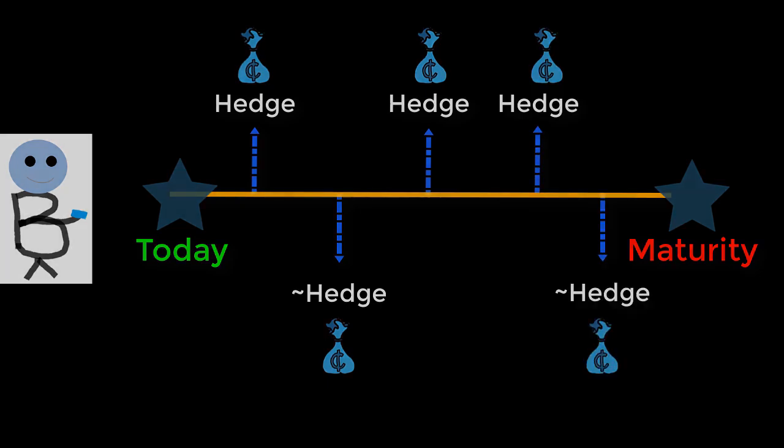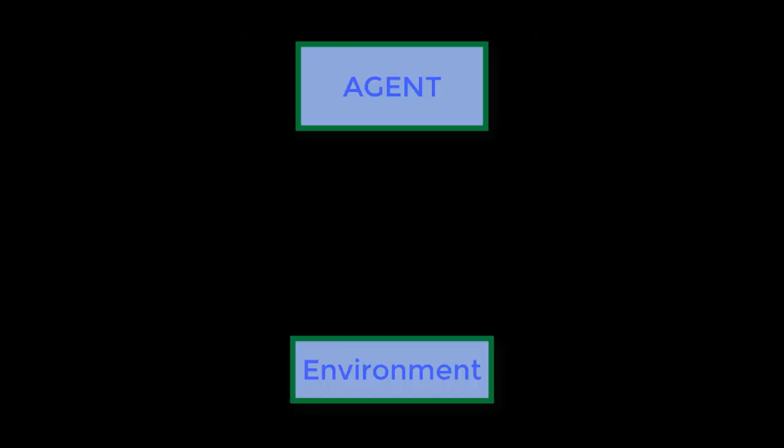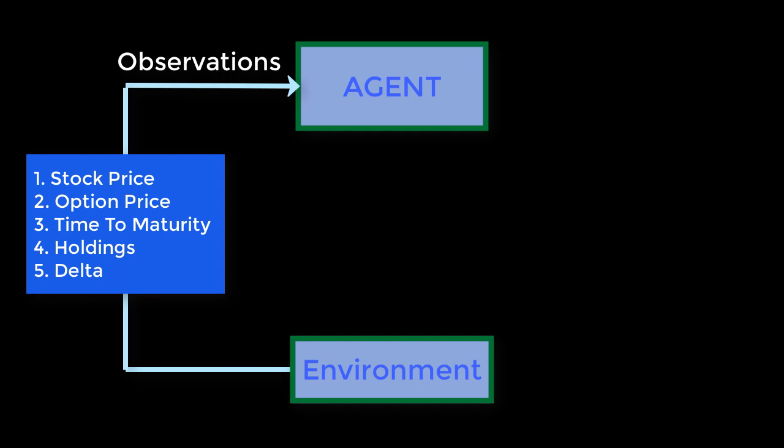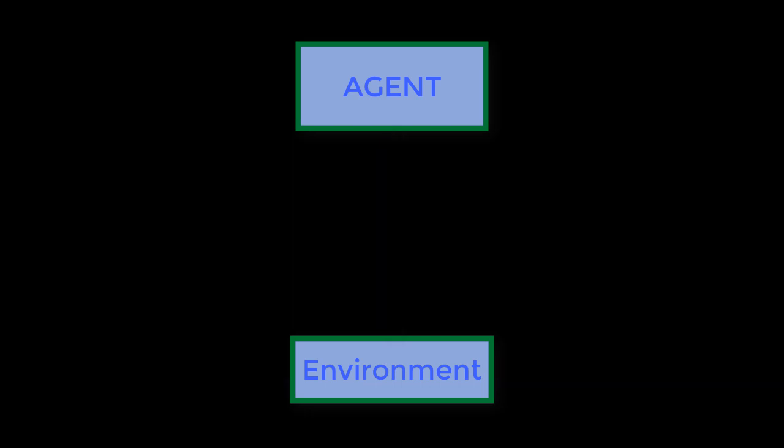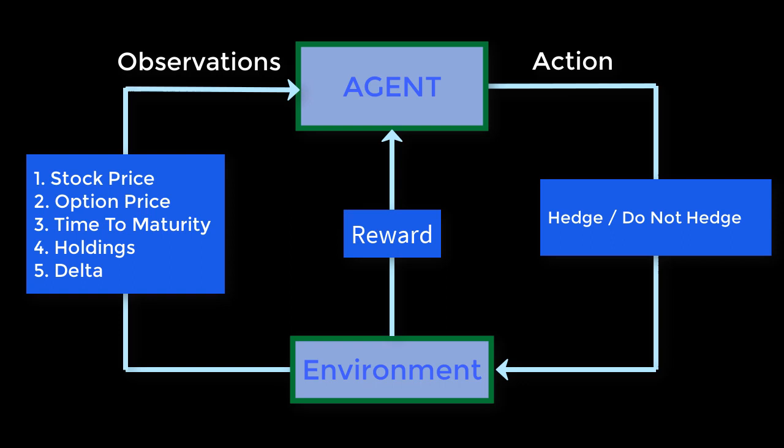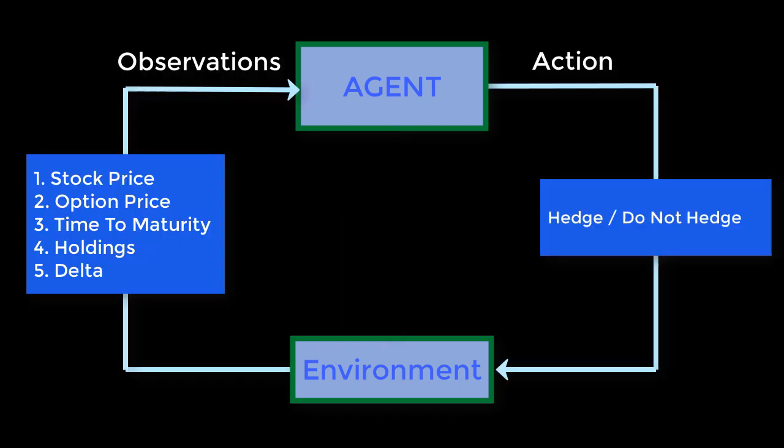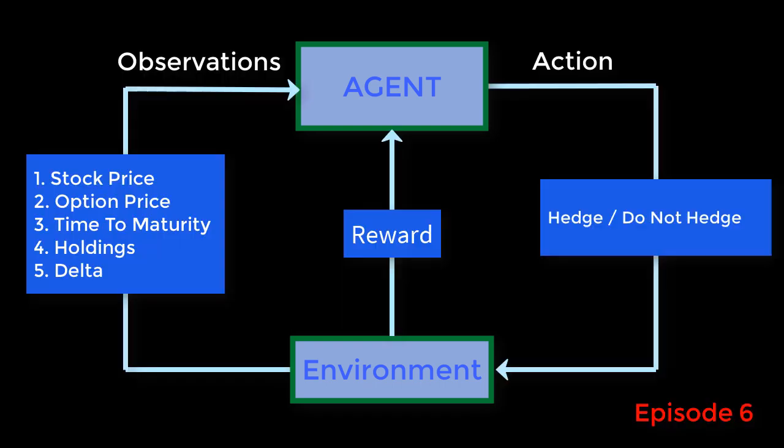The reinforcement learning setup is composed of an agent and an environment. The environment sends a state to the agent, which takes an action in response. The agent evaluates its last action based on the reward returned. The loop continues until the environment sends a terminal state, say the maturity of the option, which ends the episode. After each episode, the agent learns to take actions that maximize the cumulative reward.